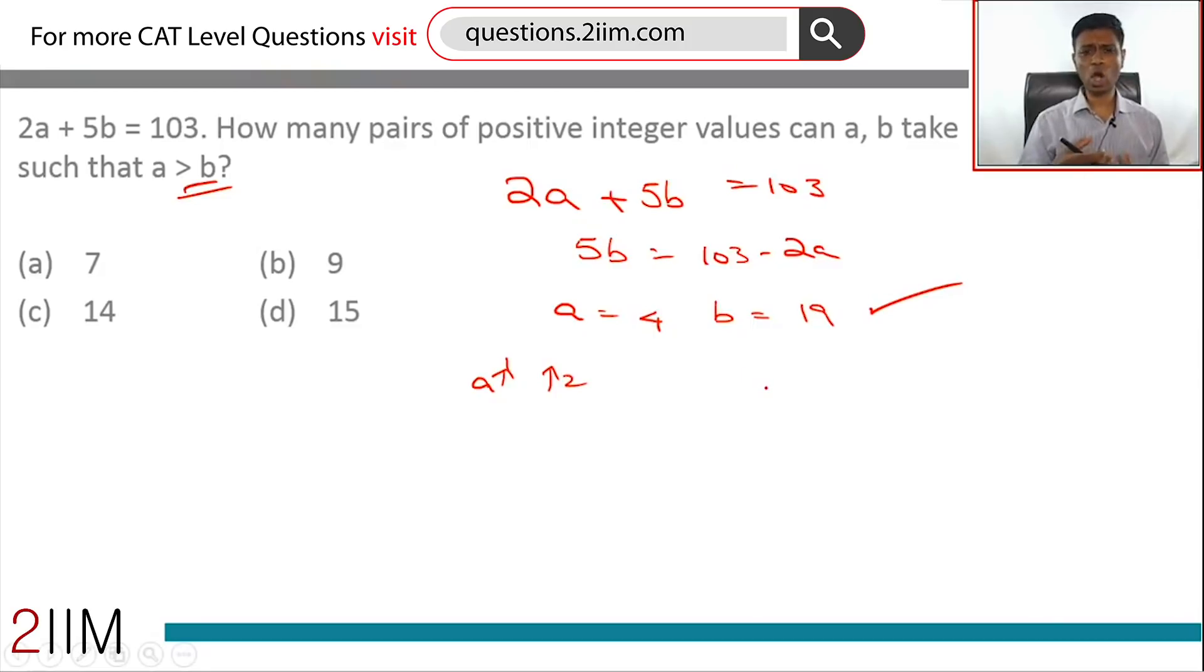If a increases by 1, the sum goes up by 2. This has to be offset by b reducing, but if a increases by 1, the sum goes up by 2. 5b cannot reduce by 2, so that's ruled out. If a goes up by 2, the sum goes up by 4. 5b cannot fall by 4, that's ruled out.